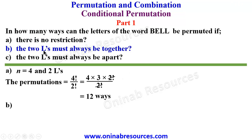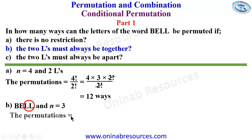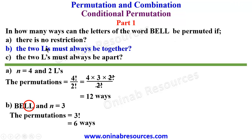For part (b), the two L's must always be together. In this case, since the two L's are always taken as one unit, we effectively have only three letters, making n equal to 3. The permutations will be 3!, and 3! equals 6. So there are 6 ways of permuting the letters of the word BELL such that the two L's must always be together.